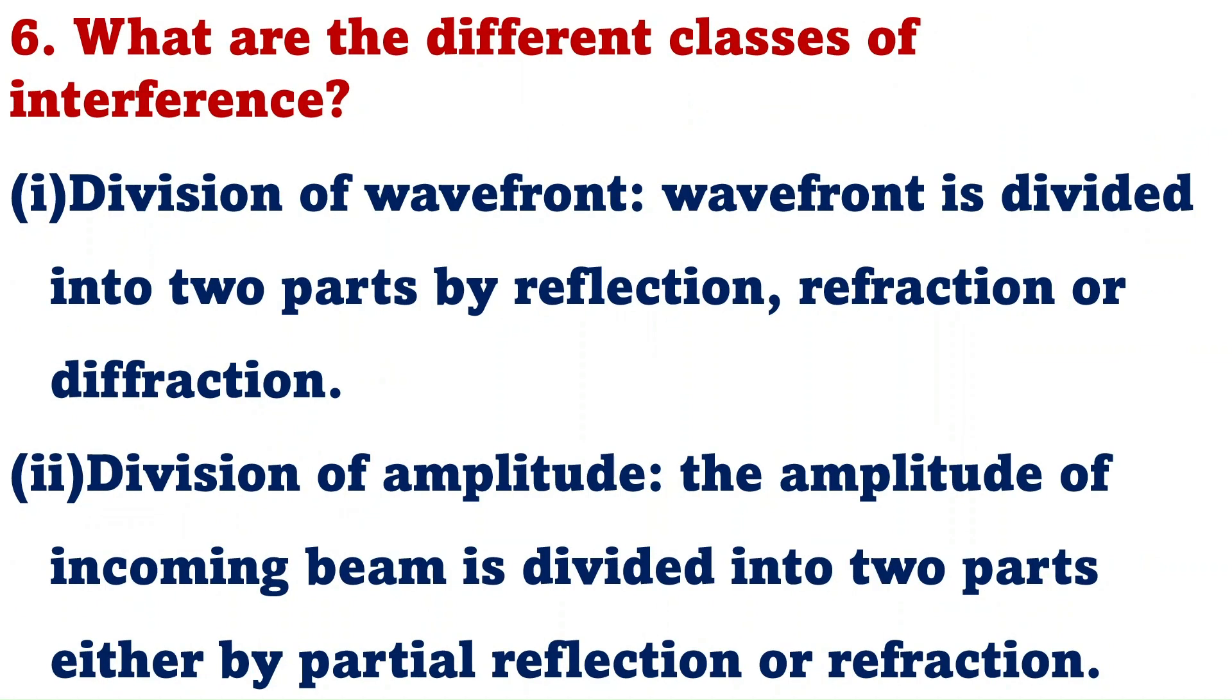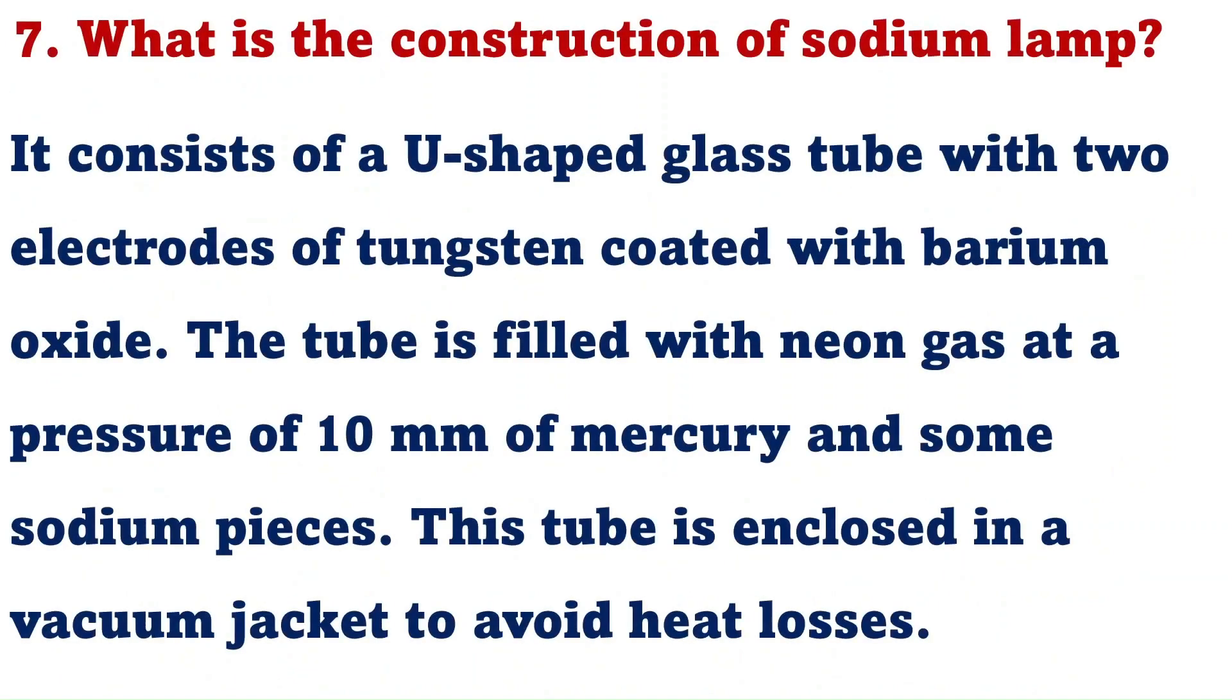What are the different classes of interference? There are two different classes. One is division of wave front. Another is division of amplitude. In division of wave front, the wave front is divided into two parts by reflection, refraction, or diffraction. In division of amplitude, the amplitude of incoming beam is divided into two parts either by partial reflection or refraction.